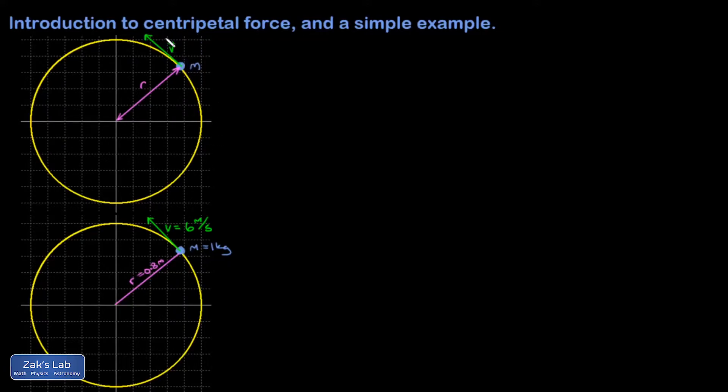Its velocity vector is always tangent to the curve, and the radius of curvature is r.